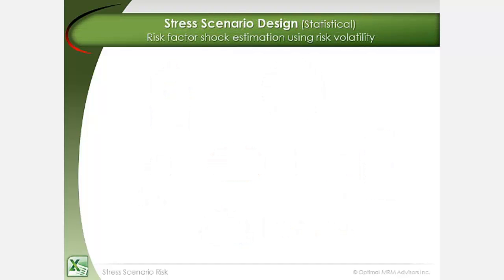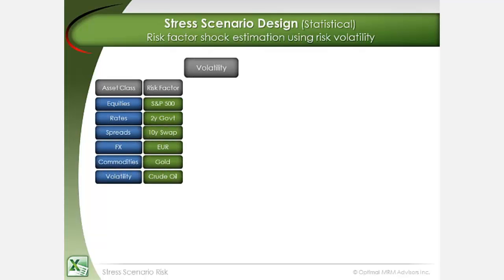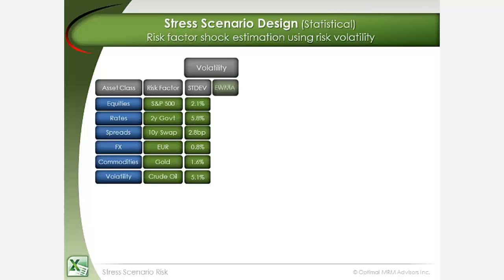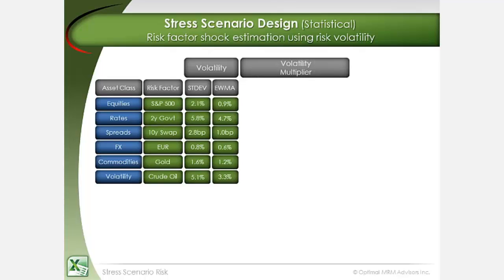A statistical stress risk measurement approach is used to illustrate the process of constructing stress scenarios and using them to measure portfolio stress scenario risk. The daily volatility of individual risk factors are calculated from historical price and yield information using either the standard deviation method or the more responsive exponentially weighted moving average, or EWMA. The volatility multiplier is then applied for an appropriate stress confidence level, such as 99.95%.